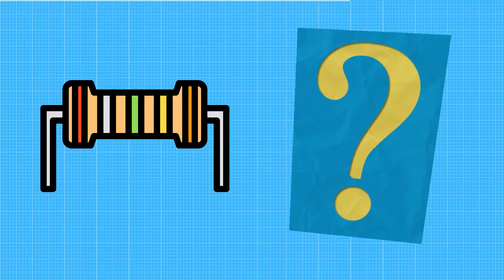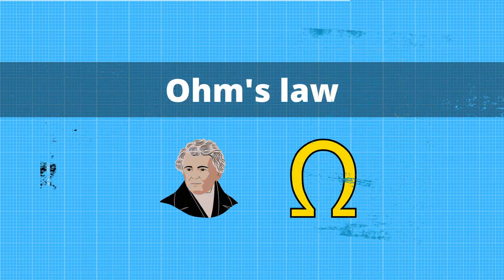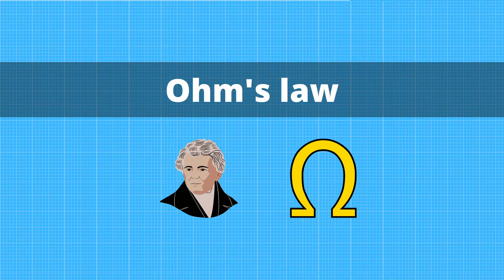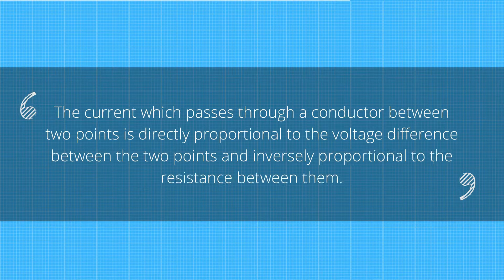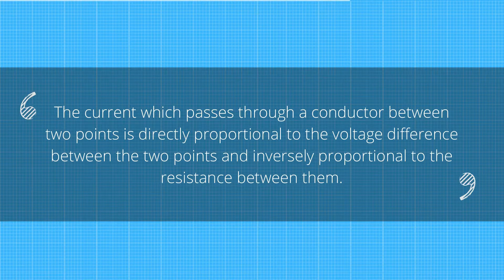To fully understand resistance, you must fully understand Ohm's law. Ohm's law is the most basic of all the laws of electric circuits. It states that the current which passes through a conductor between two points is directly proportional to the voltage difference between the two points and inversely proportional to the resistance between them.